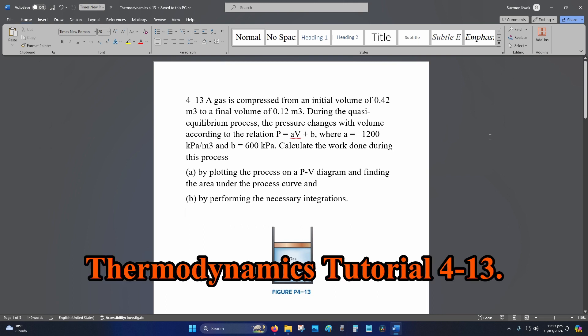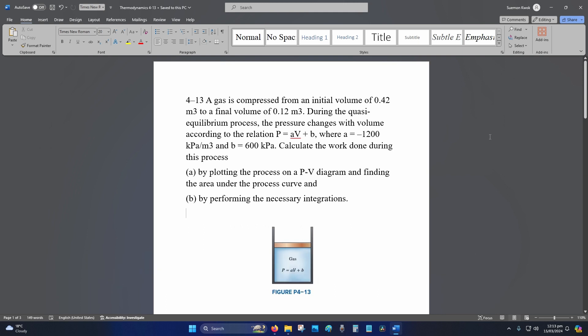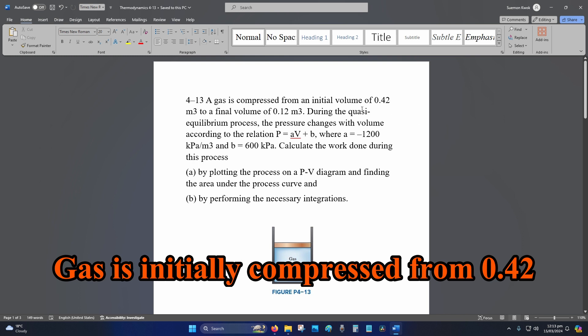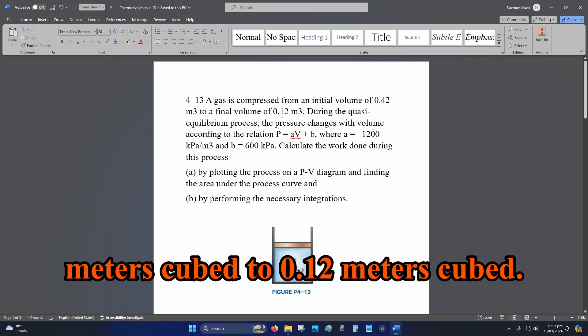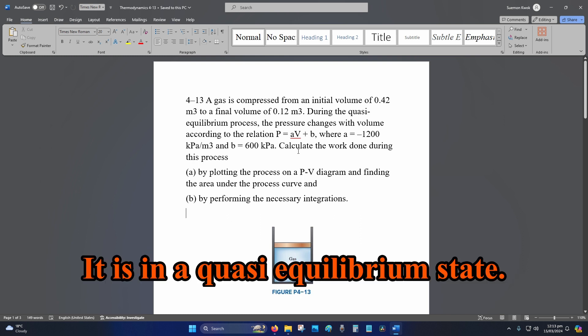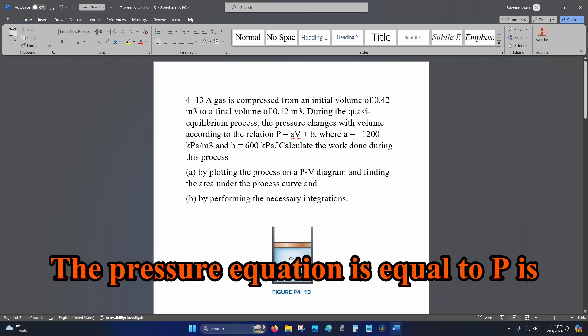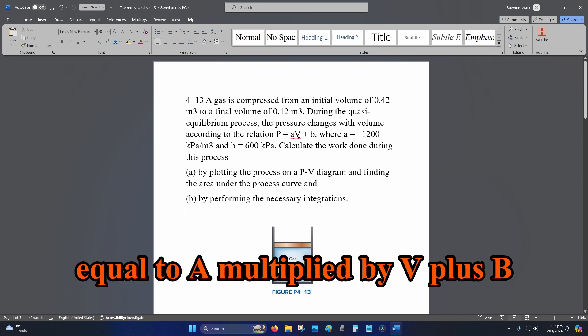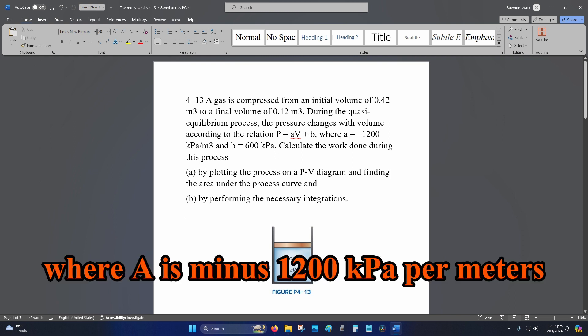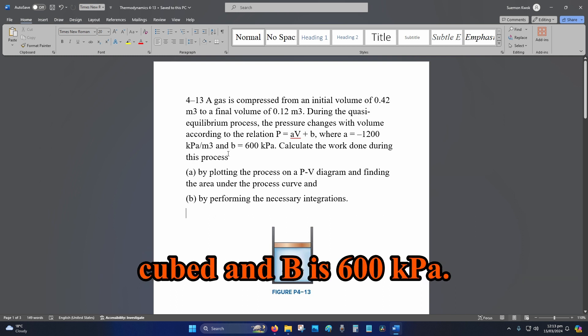Hey internet, welcome to Thermodynamics Tutorial 4-13. Gas is initially compressed from 0.42 meters cubed to 0.12 meters cubed. It is in a quasi-equilibrium state. The pressure equation is P equals A multiplied by V plus B, where A is minus 1,200 kPa per meters cubed and B is 600 kPa.